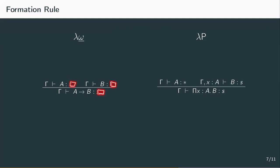Okay, let's write down the rule with box. The first premise is gamma yields A of type box and the second is gamma yields B of type box. Then we can conclude gamma yields A to B is also of type box. The simplest form that A and B can take is star. We get then that star to star is box.